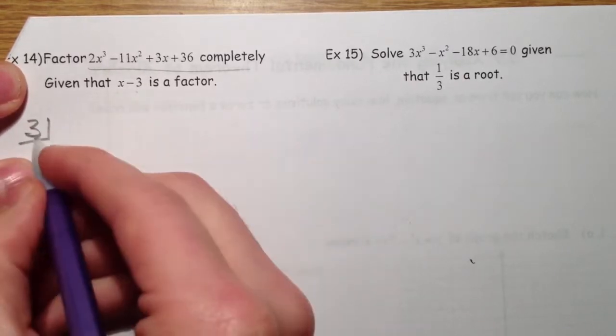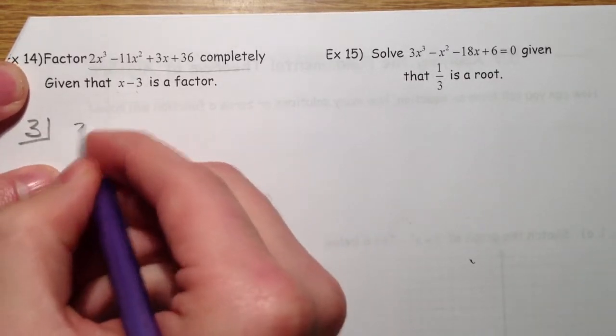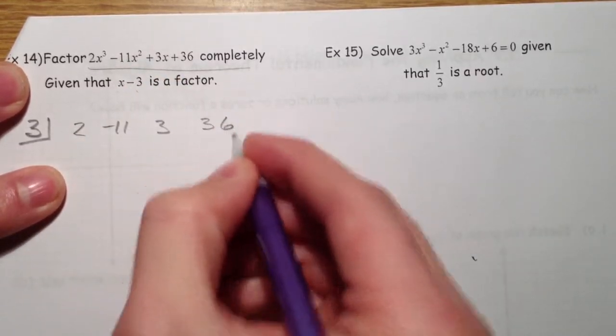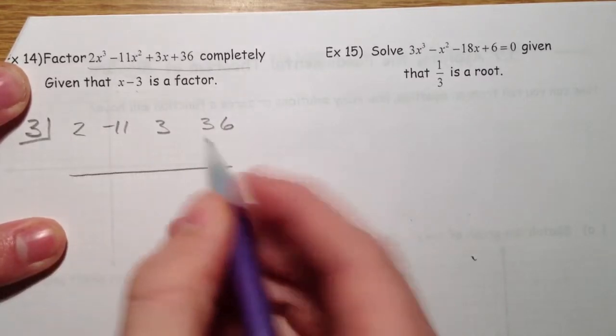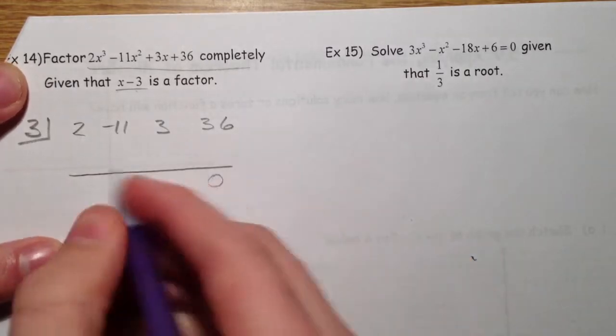So x minus 3 is a factor. I'm plugging in 3 right there. 2, negative 11, 3, 36. Now, one thing to keep in mind. They're saying x minus 3 is a factor. So we better get a remainder of 0 when we're done.